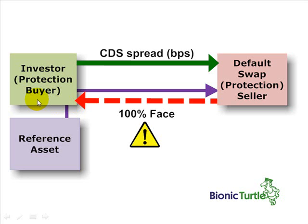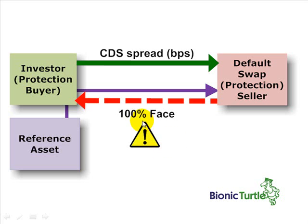So you can see the protection buyer, as long as the seller makes good on their part of the arrangement, has been completely protected from the credit risk of the underlying reference asset. So we may ask: what constitutes a credit event or triggers the payoff from the seller to the buyer?